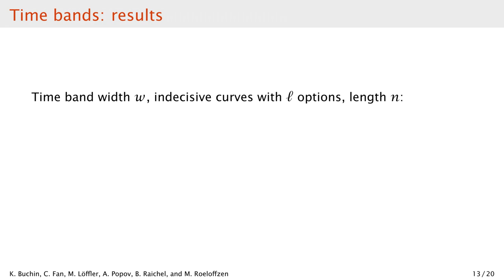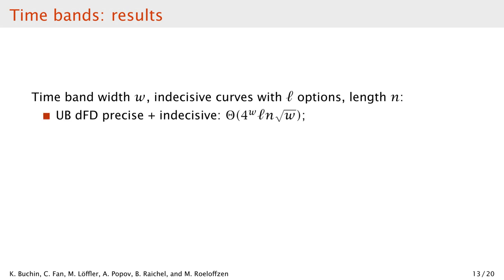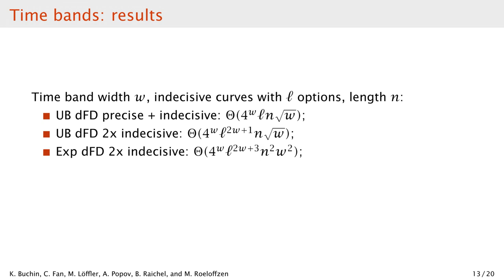We do not have the time to go into detail, so we just describe the results. All of them are done by a somewhat technical but reasonably straightforward dynamic program. We fix some constant width w of the time band and consider indecisive curves of n points with l options per point. In the simplest case, where one curve is precise, we get running time polynomial in l and n but exponential in w for the upper-bound discrete Fréchet distance. If both curves are indecisive, the dependency on l to the power of 2w+1 is less nice, but it is still fine for small w and l. We can extend the result to the expected value computation. Finally, we can also obtain polynomial time algorithms for continuous Fréchet distance, involving more technicalities but still running in time polynomial in n.